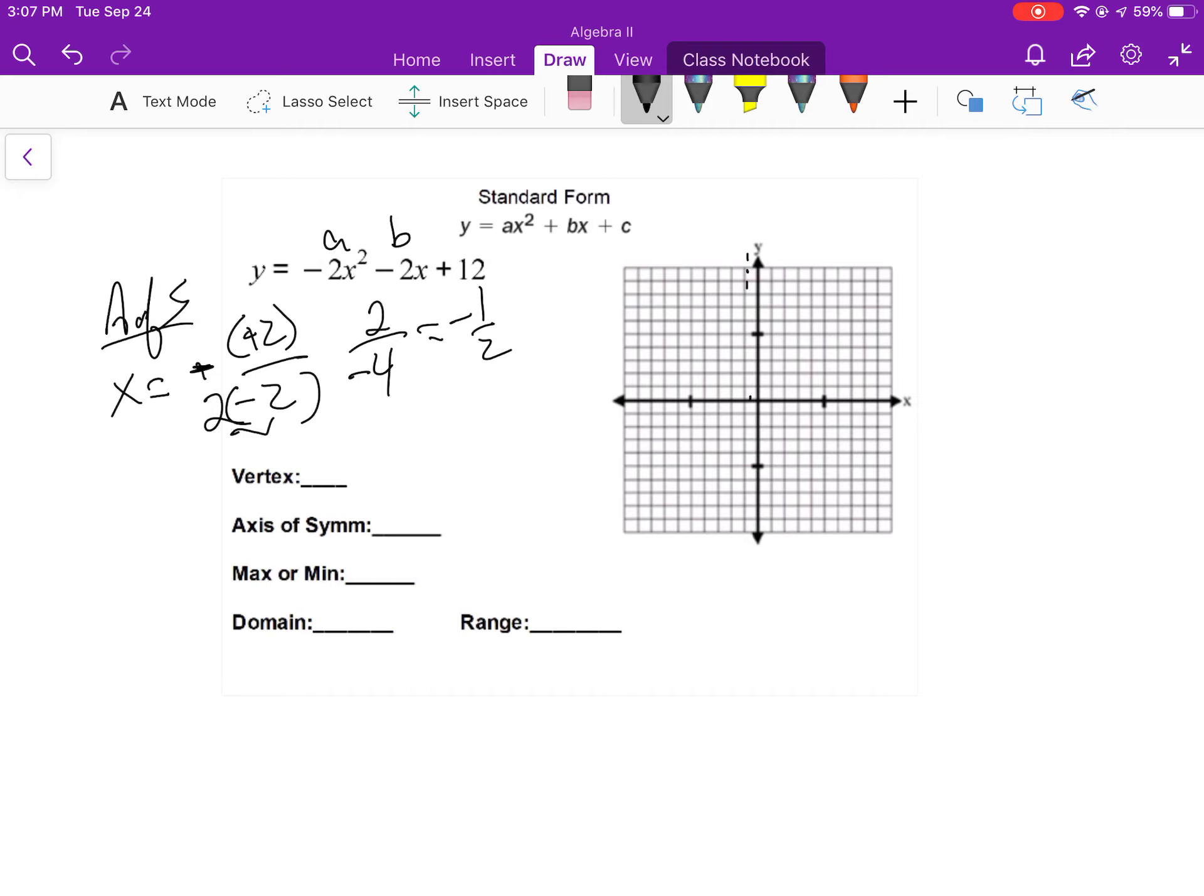So negative 2, I'm going to go negative 1 half squared minus 2 times the negative 1 half plus 12. This is 1 fourth. So negative 1 half out of that minus, well, actually plus a 1 plus 12.